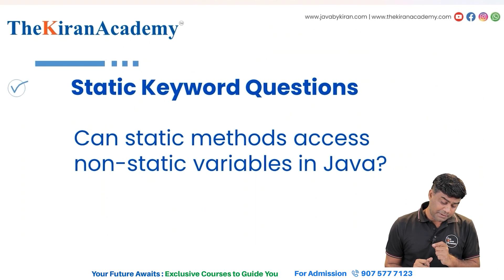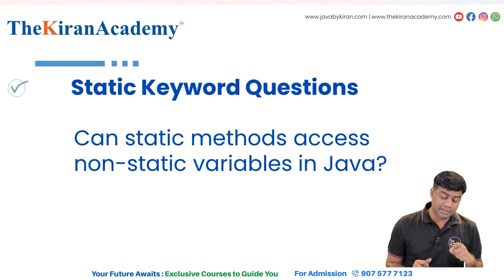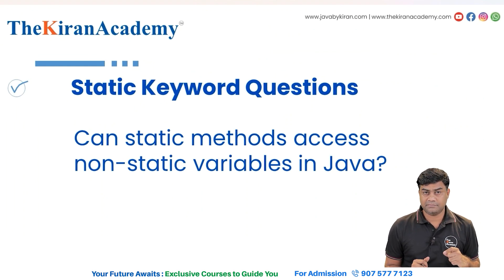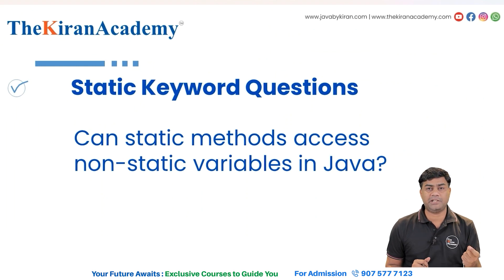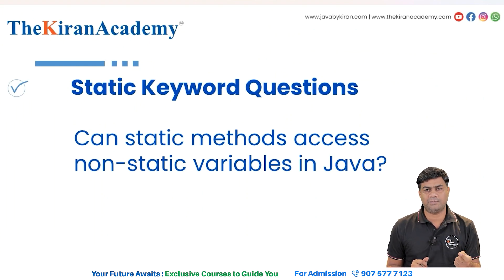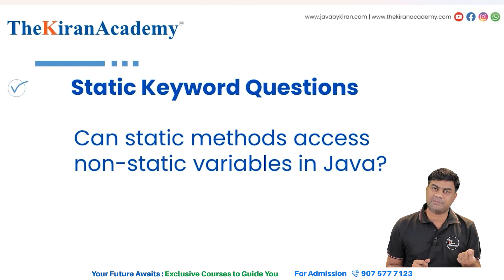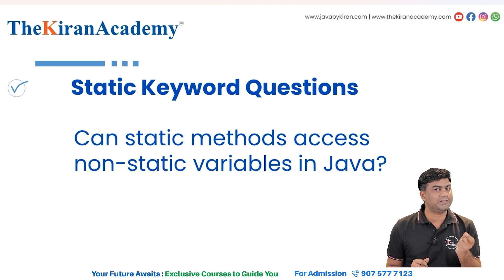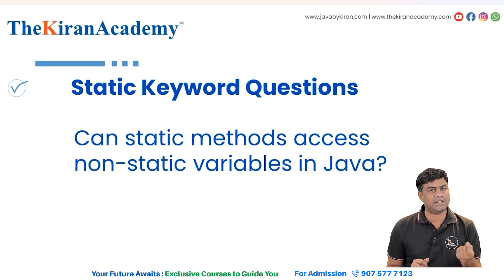Can a static method access a non-static variable in Java? The answer is no — you have to create an object. Static to static: possible. Non-static to non-static: possible. Non-static to static: possible. But static to non-static: not possible. Remember these rules.